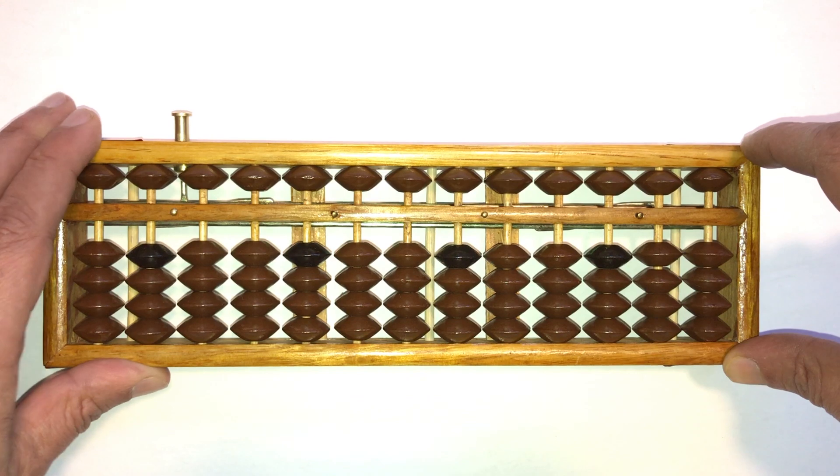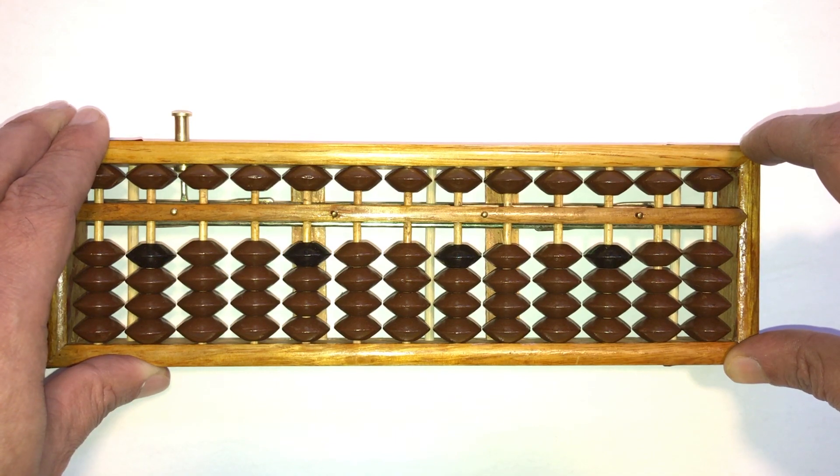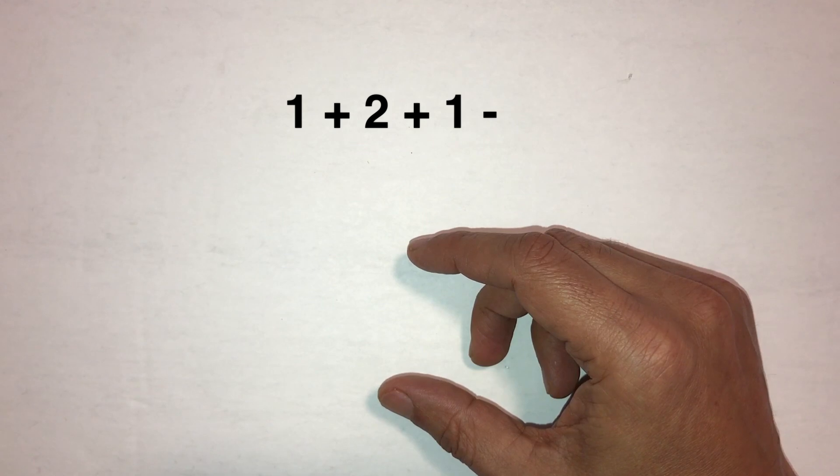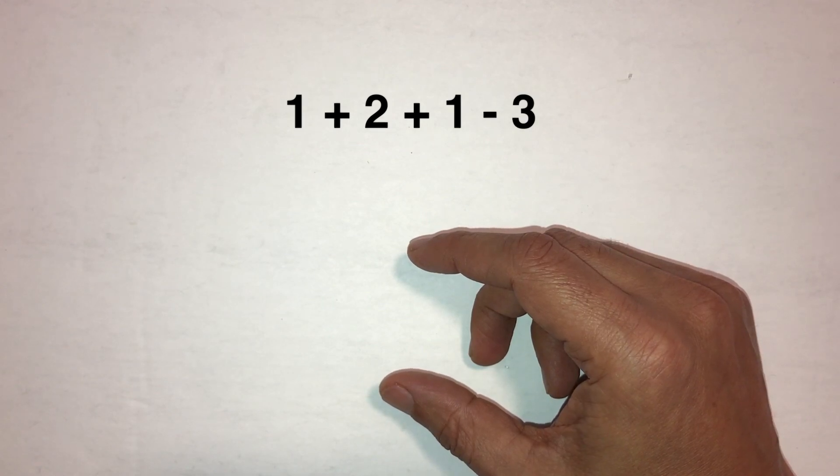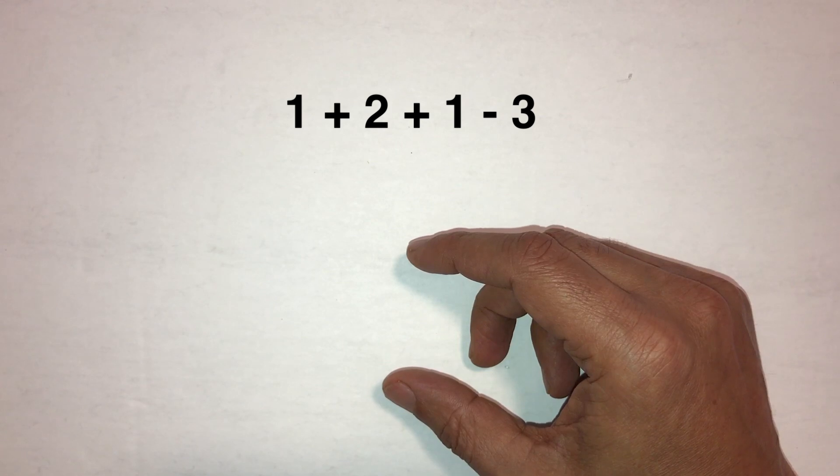Now let's put the abacus away for a minute and just visualize the abacus in our mind while moving our fingers to pretend that we're moving the beads. Let's solve 1 plus 2 plus 1 minus 3. So now we don't have an abacus there in front of us. We're just going to imagine that we're moving beads in the ones column and coming up with the answer.